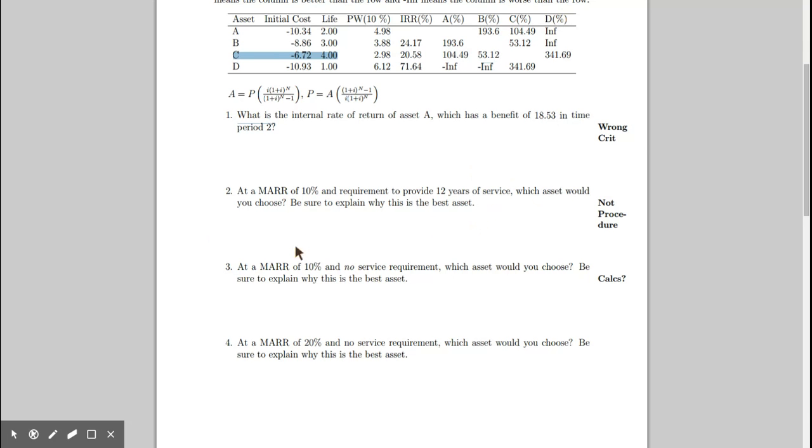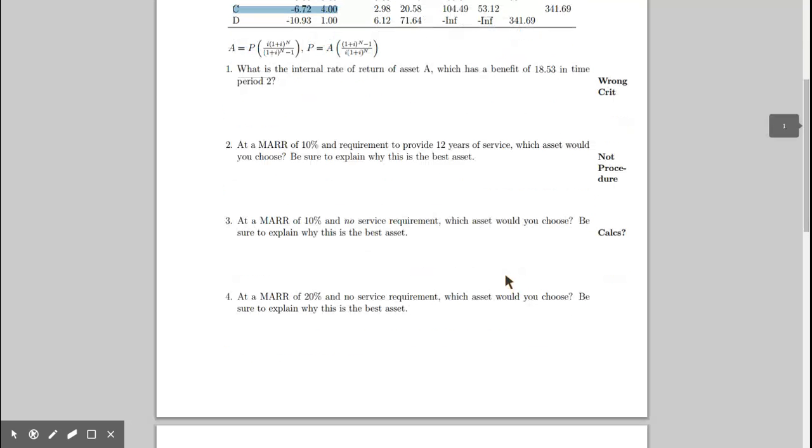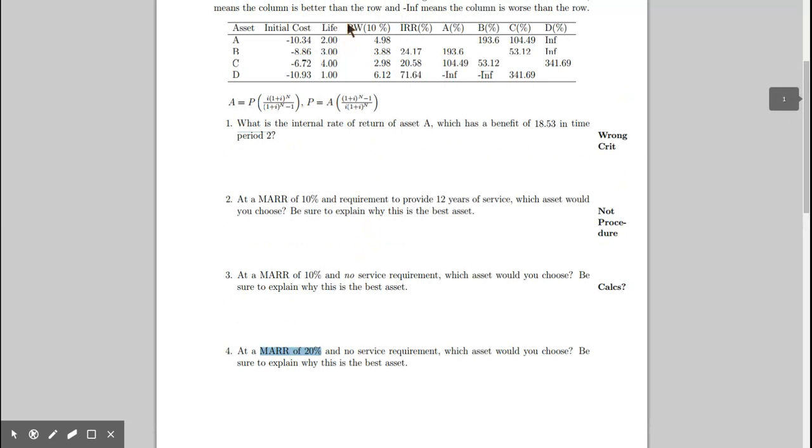This one right over here has to do with no service life. And this is kind of a simple present worth criteria. The last one, please note that the minimum total rate of return has changed. Frequently it'll be 20%, sometimes it'll be 15% or something else. It is critically not 10%, which means that you can't do something as simple as look at this present worth and say, oh, it's this one. So it requires you to do the incremental internal rate of return procedure.